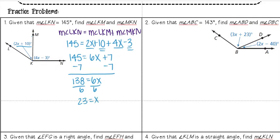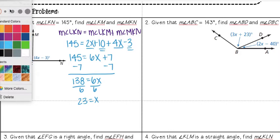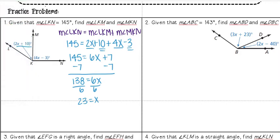But I am not quite done yet. I found what x is equal to, but the question asked me to find the measure of angle LKM and MKN. So I'm going to start with LKM. LKM was 2x plus 10, so to find that angle, I know x equals 23, so I'm going to substitute that in for x.